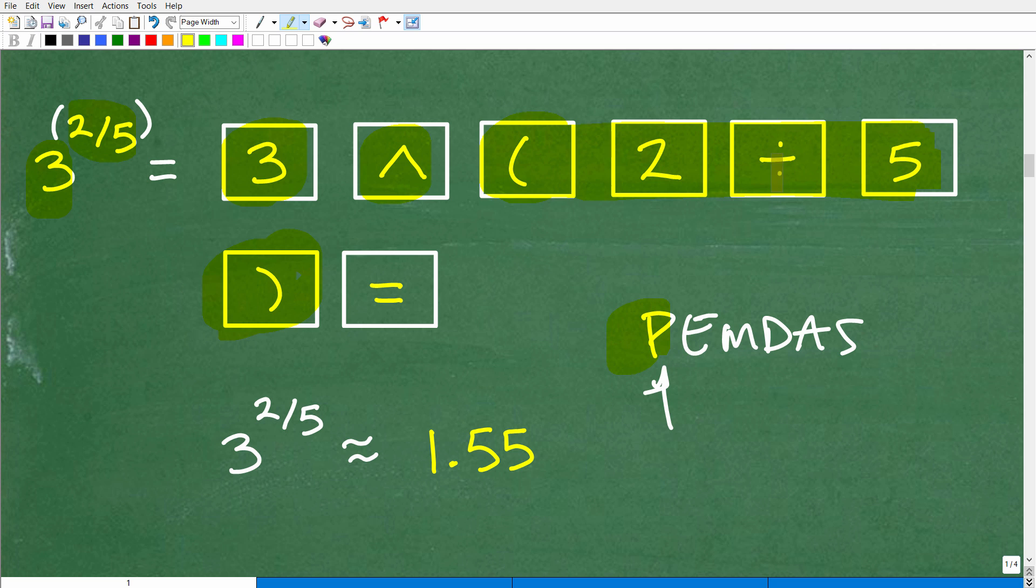We're going to get this value, then take 3 to the 2 fifths explicitly by putting in those grouping symbols, those parentheses. We do parentheses first. After everything's done here, we're going to do our E or our powers part next. When we type everything into our calculators this way, you're going to get 3 to the 2 fifths power, which is approximately 1.55. Of course, there's more decimals, but you get the idea.